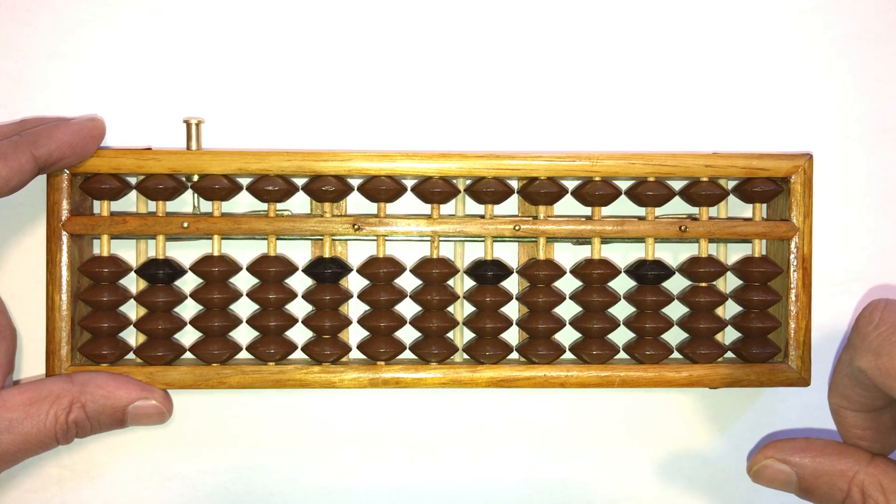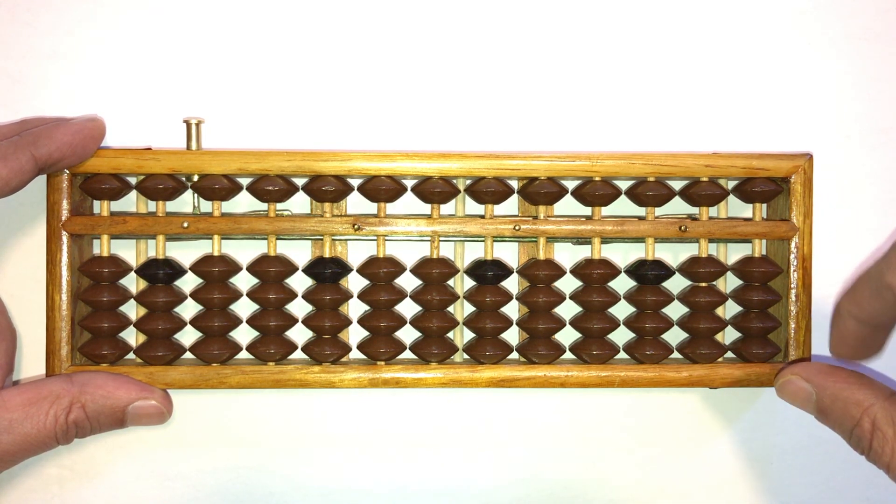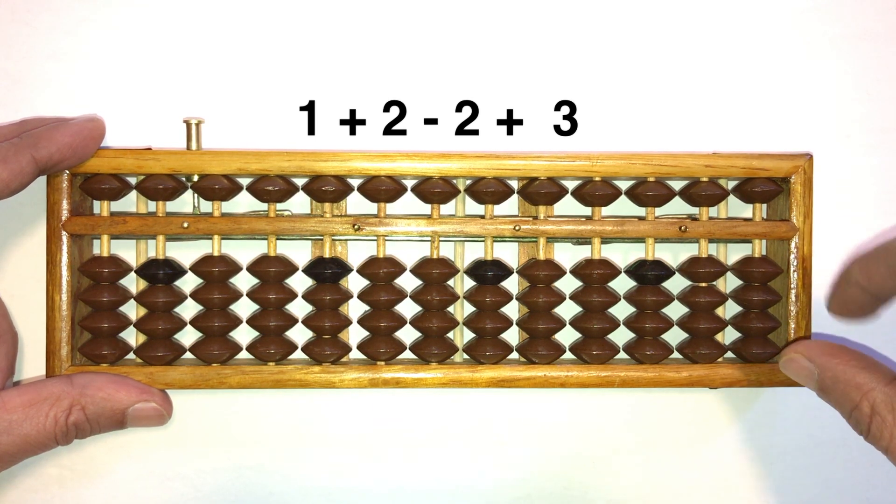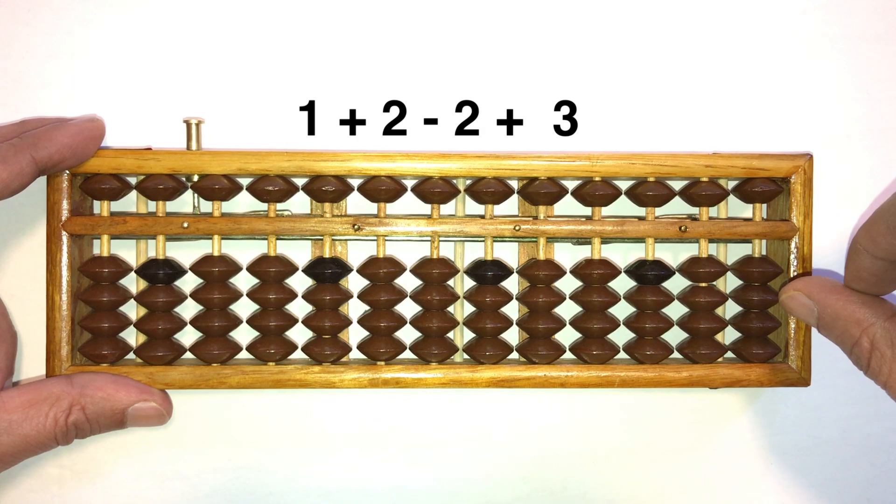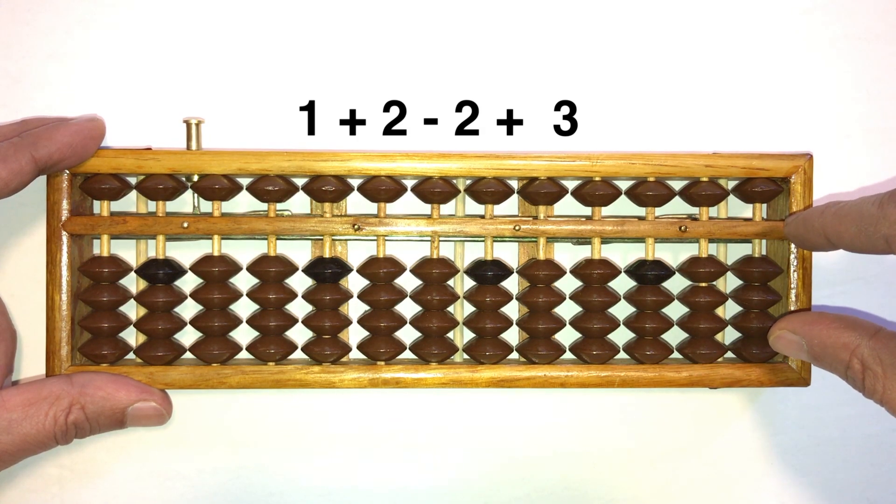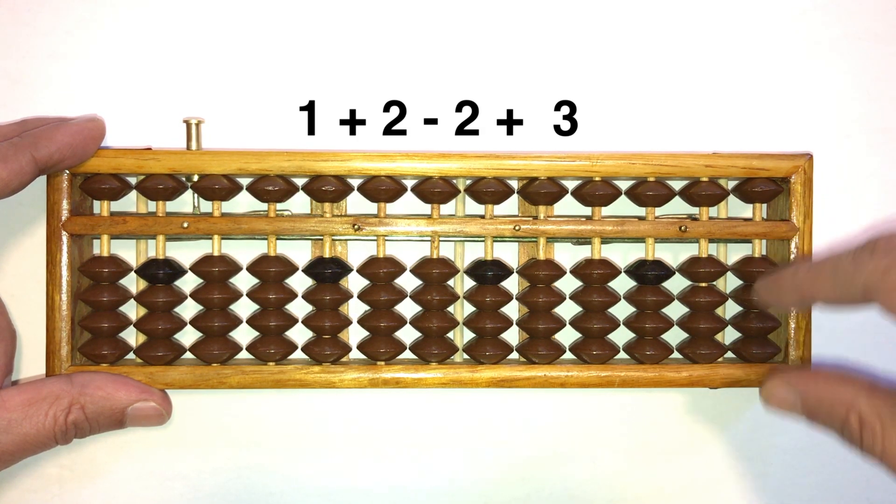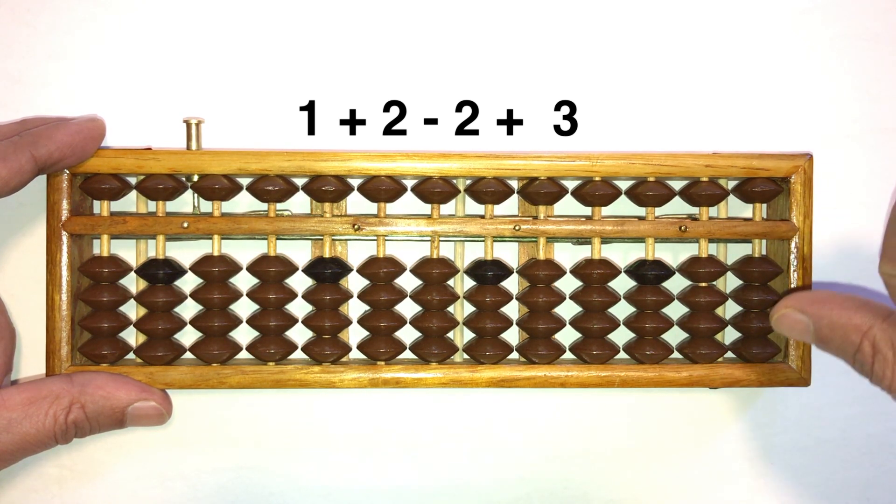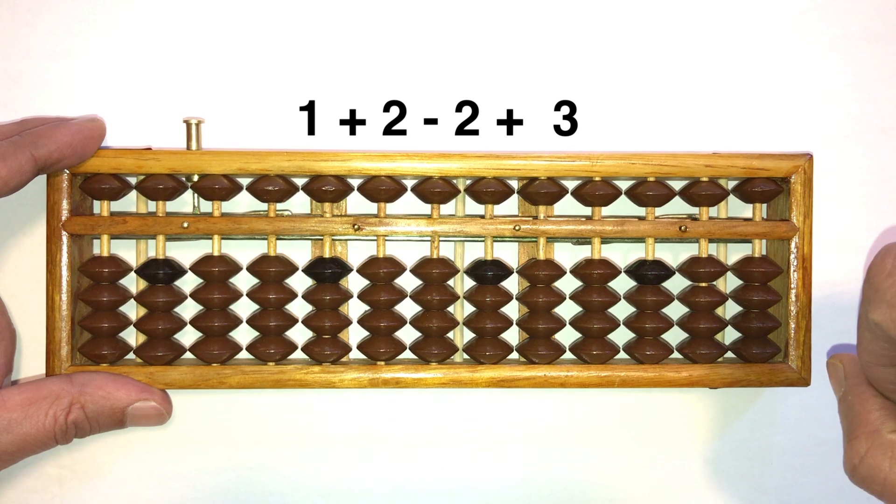Well, let's do another one. Let's do 1 plus 2 minus 2 plus 3. So let's move 1 up with our thumb. Imagine we just moved 1 bead up. Plus 2, I see 3 now touching the answer bar. Take away 2, you're left with a 1. Add 3, answer is 4.